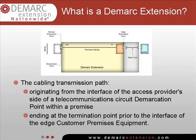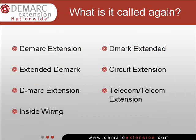A DMARC Extension is the cabling that extends the telecommunications service from the access provider's side of the demarcation point to the Edge Customer Premises Equipment, or ECPE. This may include in-segment equipment, media converters, and patch cords as required to complete the circuit's transmission path to the ECPE. Due to a lack of set standards in the industry, there has been no set definition for a DMARC Extension, leading many to use other words to describe this important piece of cabling. The term DMARC Extension not only refers to the connection point at the access provider's side of the demarcation point, but also includes the complete cabling and transmission path to the ECPE.